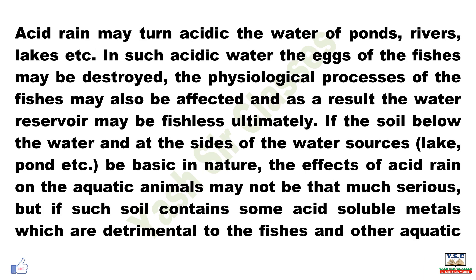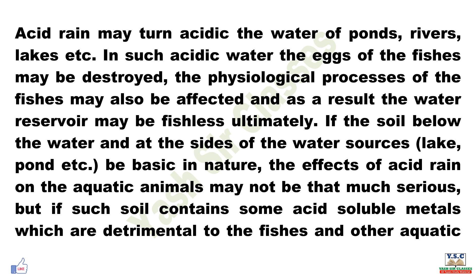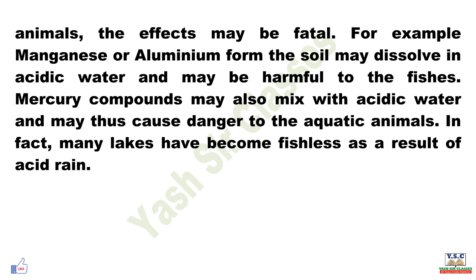Acid rain may turn acidic the water of ponds, rivers, lakes, etc. In such acidic water, the eggs of the fishes may be destroyed. The physiological processes of the fishes may also be affected and as a result, the water reservoir may be fishless ultimately. If the soil below the water and at the sides of the water sources, lake, pond, etc. is basic in nature, the effects of acid rain on the aquatic animals may not be that serious. But if such soil contains some acid-soluble metals which are detrimental to the fishes and other aquatic animals, the effects may be fatal.